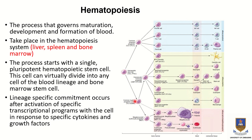A cell can only progress down a certain pathway if activated by specific transcriptional programs such as cytokines or growth factors. For example, the erythroid lineage requires erythropoietin as a transcriptional factor to activate red blood cell production, while thrombopoietin activates the platelet lineage.